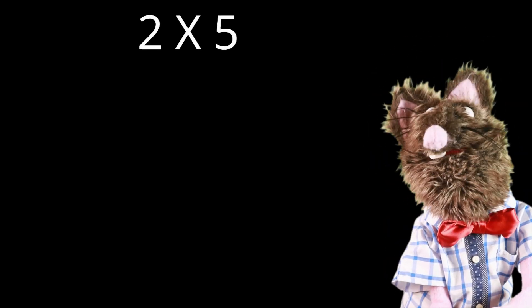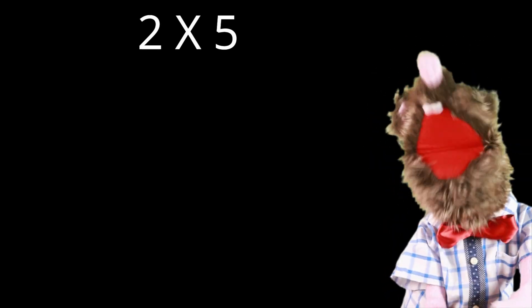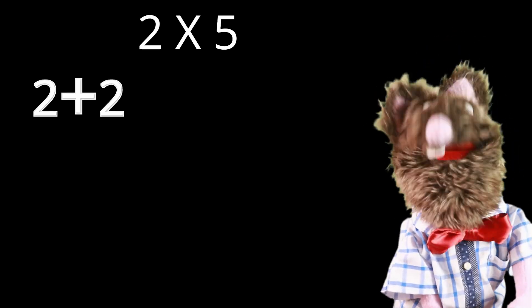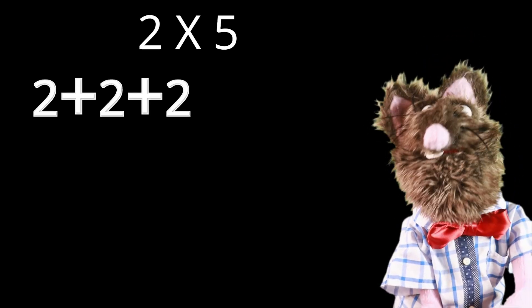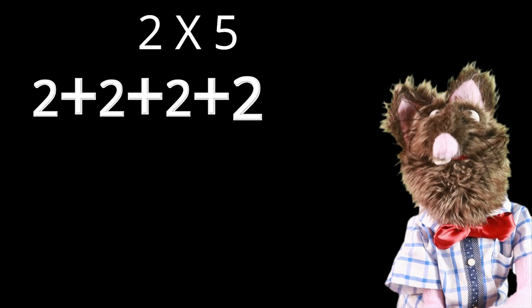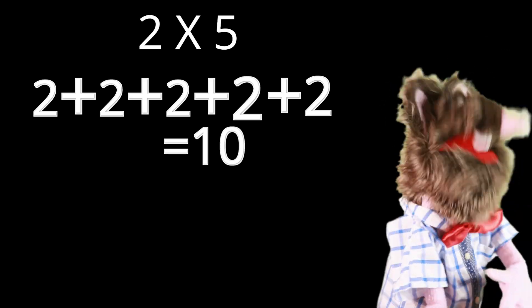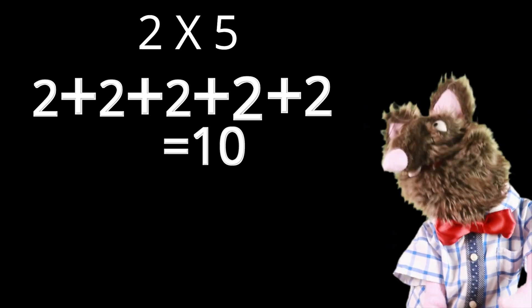Well, in multiplication you are adding the same number plus itself multiple times. Multiplying two times five is like saying two plus two plus two plus two plus two equals ten. Division is the reverse of this.